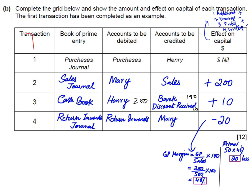To illustrate with an example: we sold 10 pencils to Mary for 500 total (50 each), earning 200 profit across all 10. Mary returned just one pencil worth 50. If 10 pencils earned 200 profit, one pencil earned 20 profit. So returning one pencil means a loss of only 20 to capital. This confirms the effect on capital is minus 20.